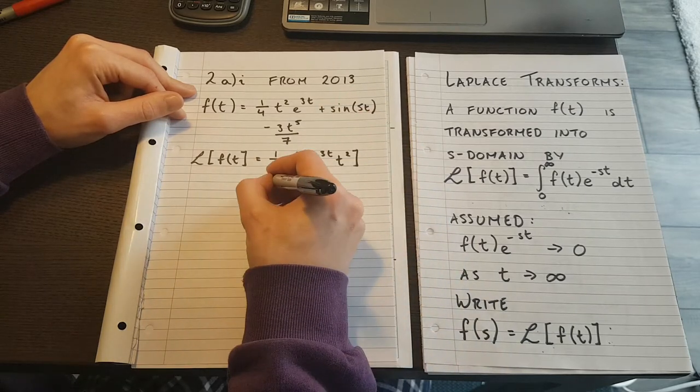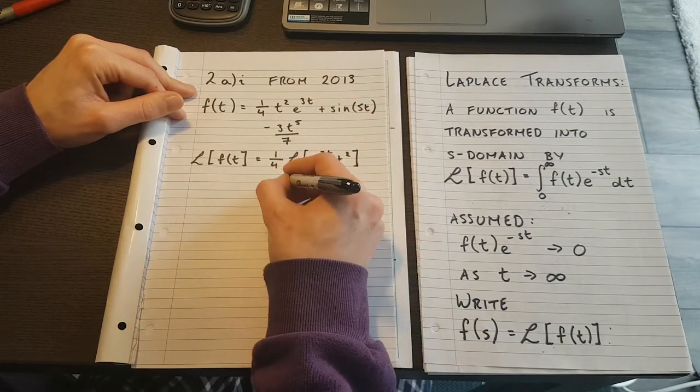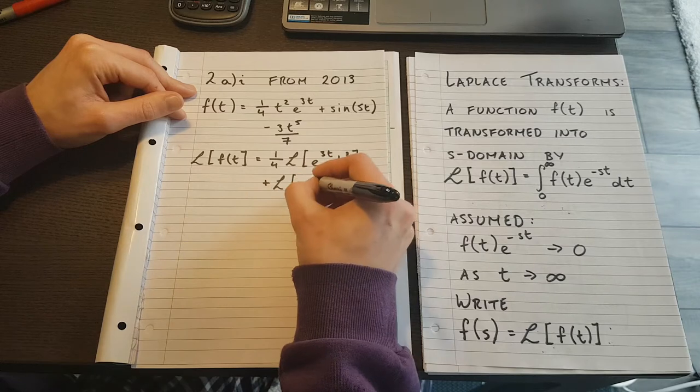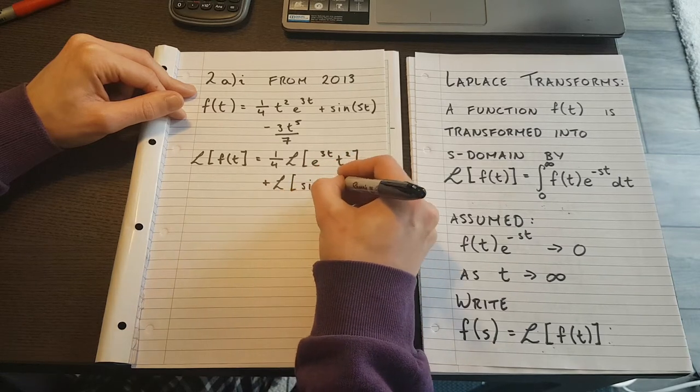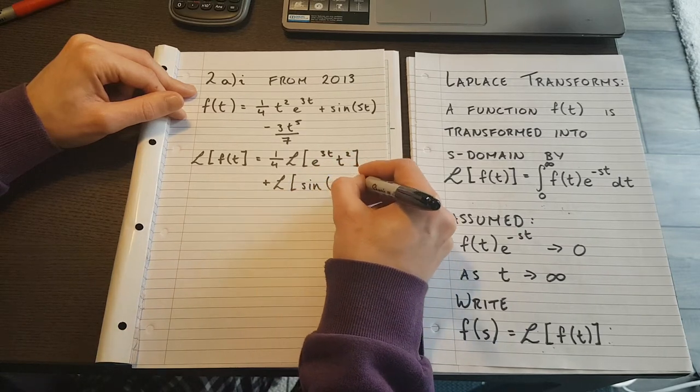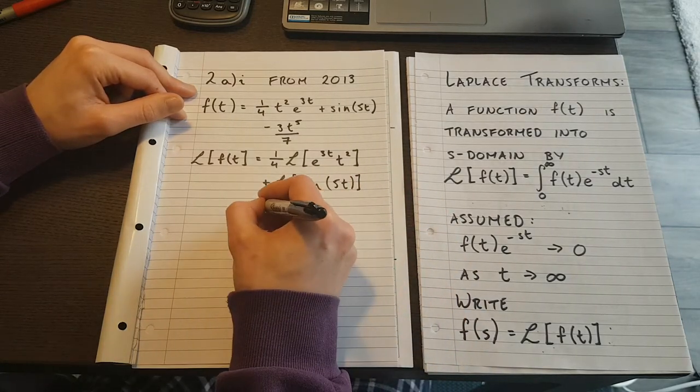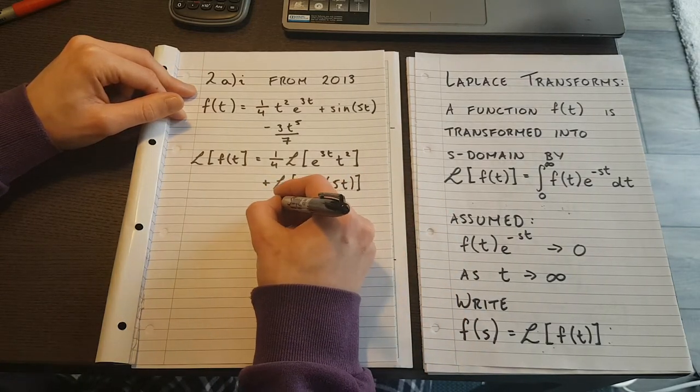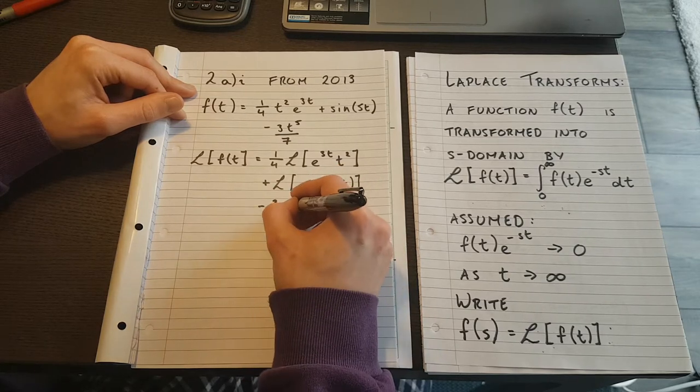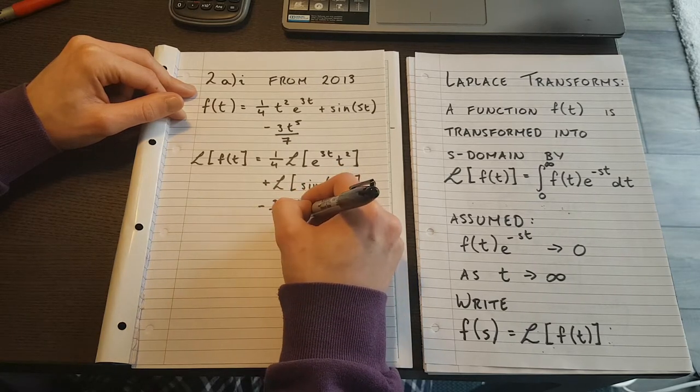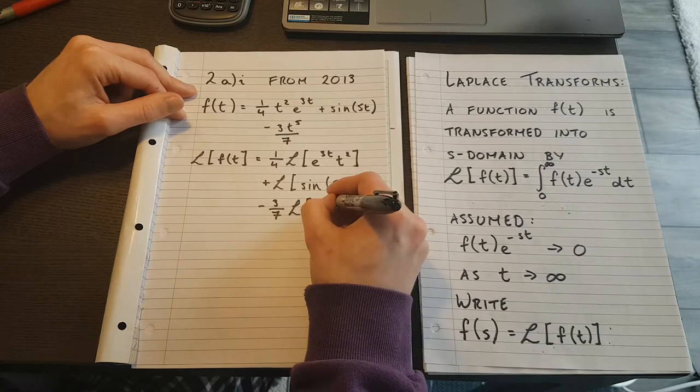Then I have a fairly simple straightforward one, I have just the Laplace transform for the sine of 5t, and now I have minus 3/7 times the Laplace transform for t^5.